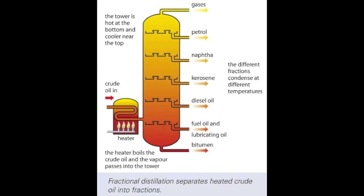The fraction with the highest boiling point condenses near the bottom of the column and the fraction with the lowest boiling point reaches the top of the column.